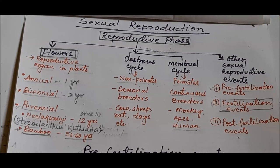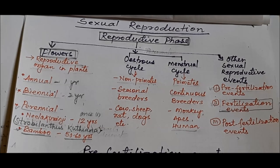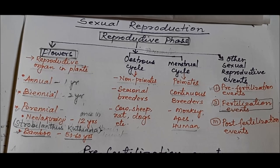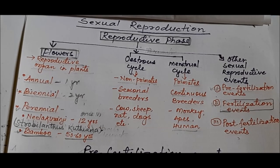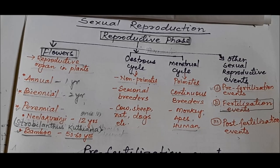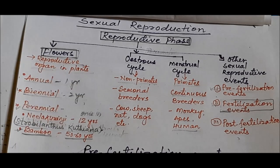In this video we are going to study about sexual reproduction. Sexual reproduction is reproduction in which two parents are involved, two gametes are involved, and two gametes fuse to form a zygote — that is, fertilization takes place. In sexual reproduction, there are three phases in the life cycle of the organism: the juvenile phase, the reproductive phase, and the senescent phase.